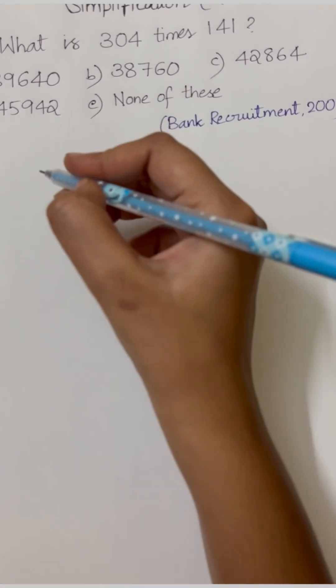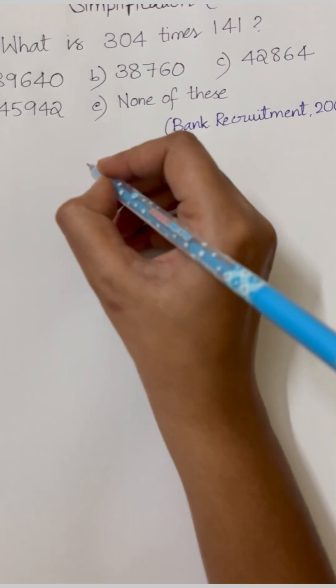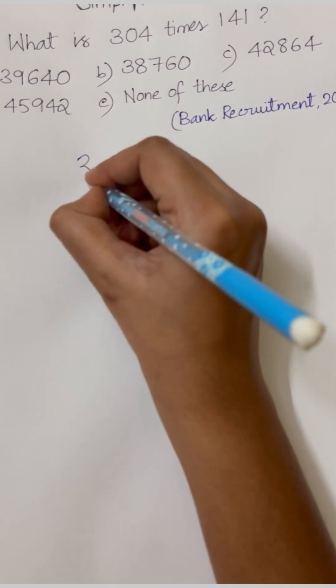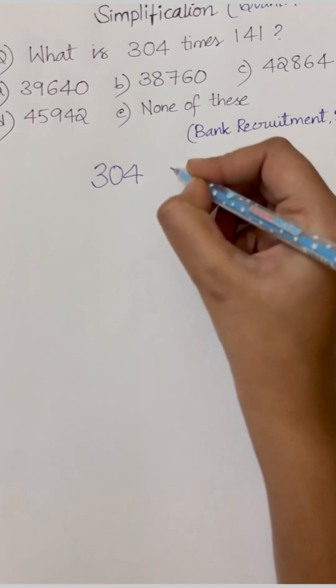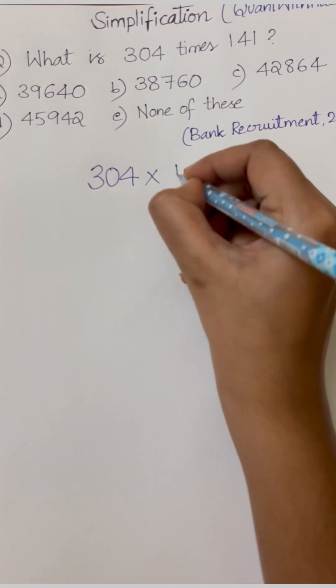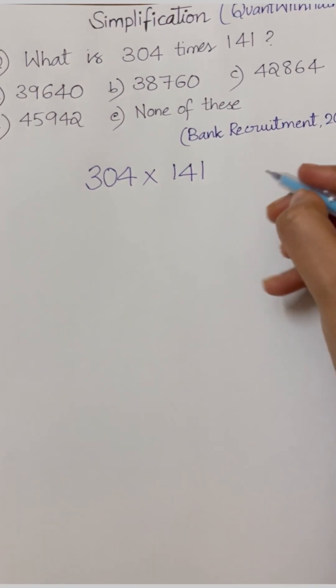Hello guys, welcome to Quant with Heinz. Here it has been asked: 304 x 141.